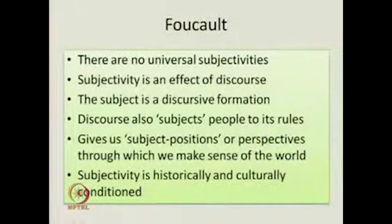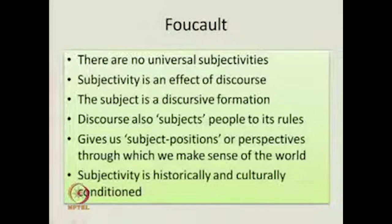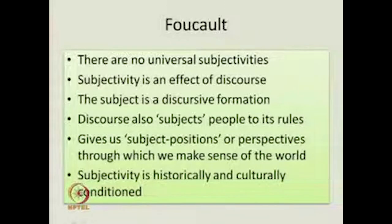So, subjectivity is the condition of being a person, the processes that go into the making and construction of the person, and the very experience of being a particular person. Now let us bring in Foucault and look at six points. First, Foucault says there are no universal subjectivities — there cannot be a subjectivity common to all of us in all senses of the term. All of our subjectivities differ. And remember why — because we also contribute in the arrangement of the resources of the self. Second, subjectivity is an effect of discourse.